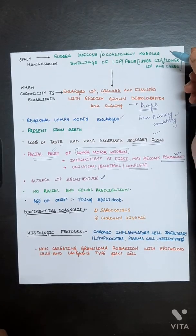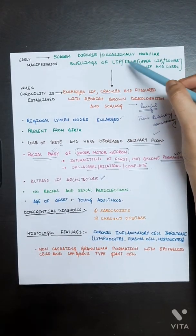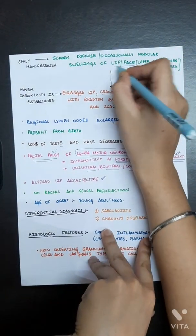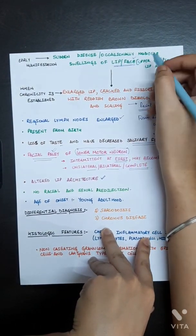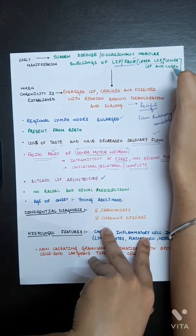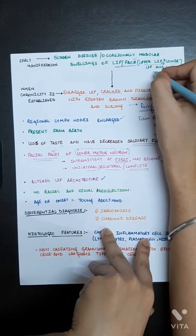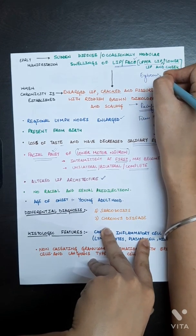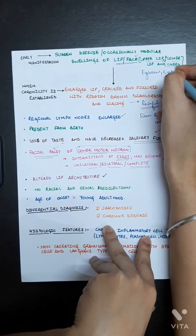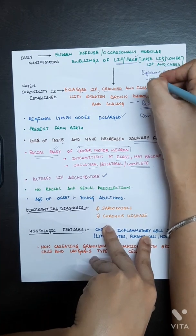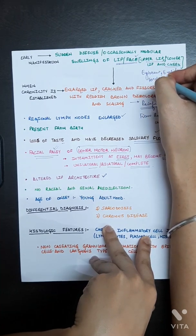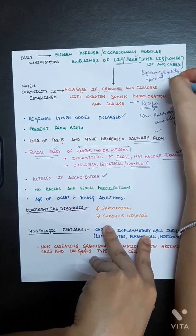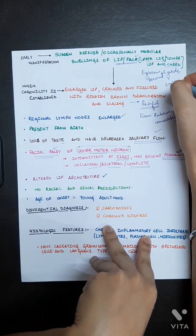During the early manifestation, sudden diffuse occasional nodular swelling of lips or face has been seen. It involves upper lip, lower lip and cheek. It may also involve eyebrow, eyelids, forehead, eyelids and scalp also.